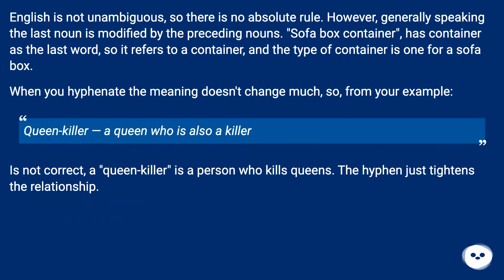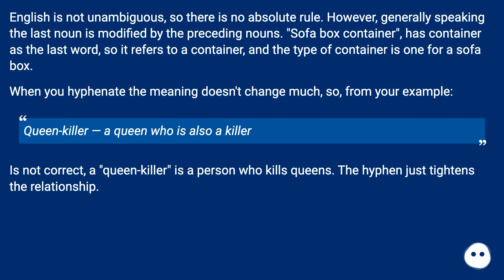English is not unambiguous, so there is no absolute rule. However, generally speaking, the last noun is modified by the preceding nouns. Sofa box container has container as the last word, so it refers to a container, and the type of container is one for a sofa box. When you hyphenate, the meaning doesn't change much. From your example: queen killer — a queen who is also a killer — is not correct. A queen-killer is a person who kills queens. The hyphen just tightens the relationship.